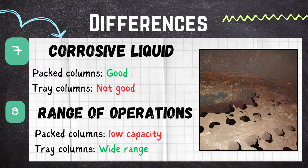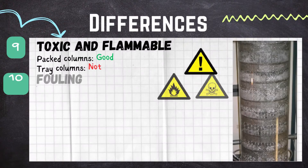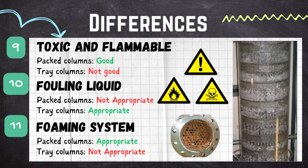Packed columns are more suitable for low capacity operations, while plate columns can handle a wide range of gas and liquid flow rates. Regarding the handling of toxic and flammable materials, packed columns are more appropriate and safe compared to tray columns, which are not as safe or suitable for handling toxic and flammable compounds.